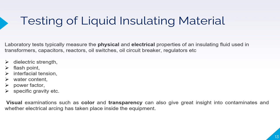Regular sampling and laboratory analysis can give great insight into equipment condition that regular electrical tests may not detect. Laboratory tests typically measure physical and electrical properties of insulating fluid used in transformers, capacitors, reactors, oil switches, oil circuit breakers, and regulators. Parameters measured during testing include dielectric strength, flash point, interfacial tension, water content, power factor, and specific gravity. Visual examination such as color and transparency can also give great insight into contaminants and whether electrical arcing has taken place inside the equipment.